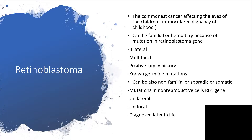It can also be non-familial, in which case it's sporadic or somatic. So there will be mutation in non-reproductive cells, that is the RB1 gene — non-germ-line mutations. Instead of bilateral, as we find in familial cases, it's going to be unilateral, and instead of being multifocal, it's going to be unifocal. And that could be diagnosed later in life.